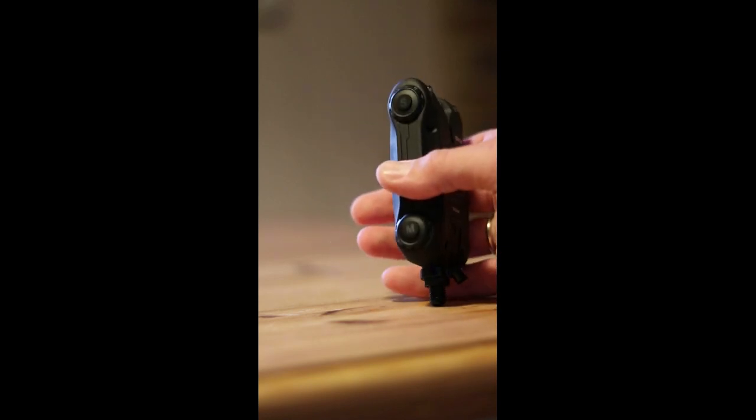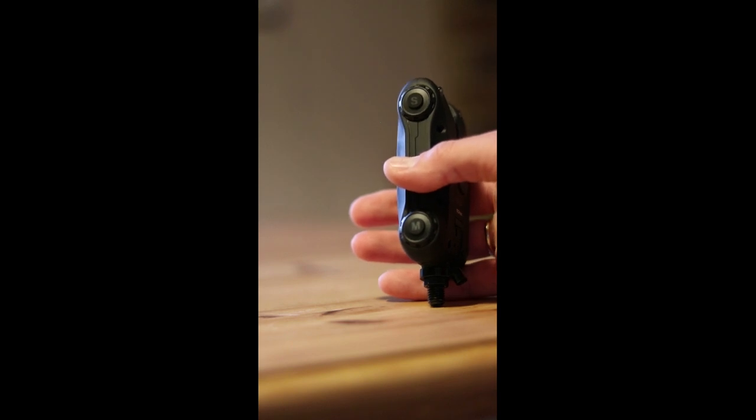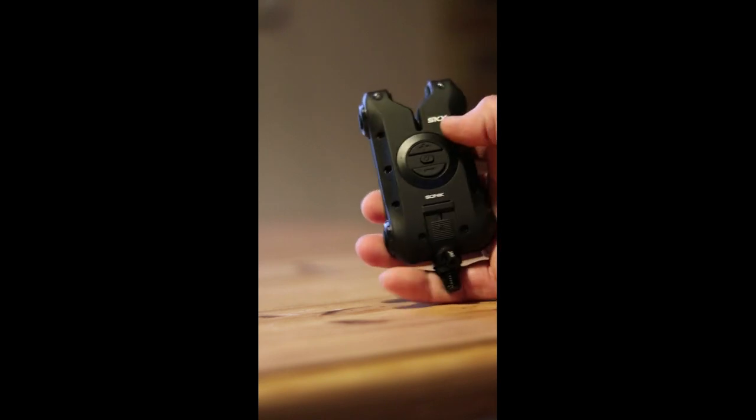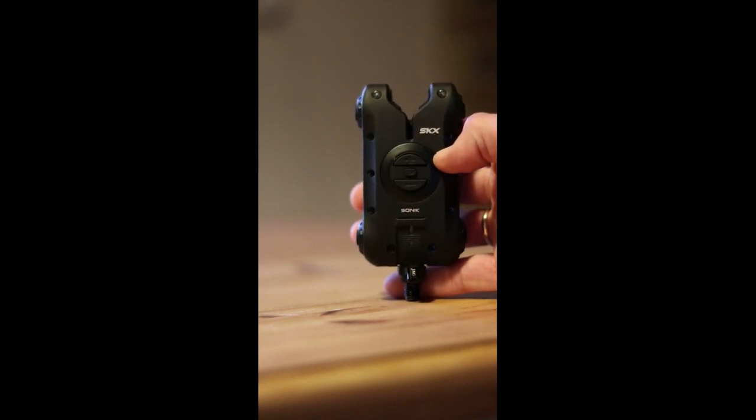And then on the other side, you've got S for sensitivity. So you've got six sensitivity settings. And at the bottom, you've got the M button. So the M button is for mute. So what you can do is when you're setting your bobbins, so that the alarm doesn't keep sounding, you can press the mute button and the alarm will silence for 30 seconds.